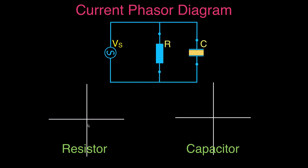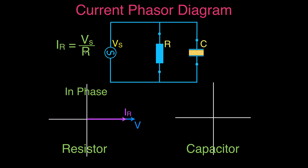As a little review: if we have a purely resistive circuit, the voltage and the current are in phase — no 90-degree angle between them. We calculate the resistance with Ohm's Law: current equals voltage divided by resistance.